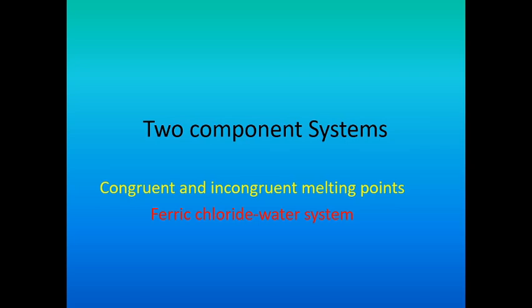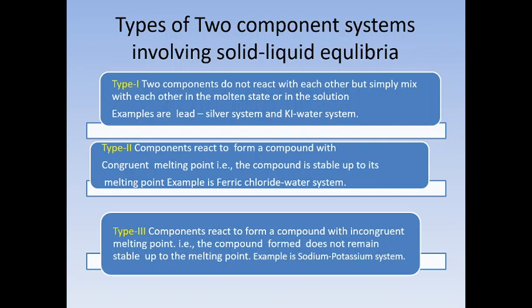Hello students, today let us continue with two-component systems. We have three types involving solid-liquid equilibrium. Type one: two components do not react but simply mix — examples are lead-silver and potassium hydride-water systems. Type two: components react to form a compound with a congruent melting point — example is ferric chloride-water system. Type three: components react to form a compound with an incongruent melting point — example is sodium-potassium system.